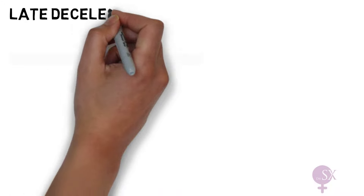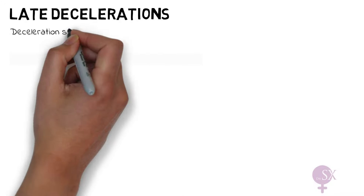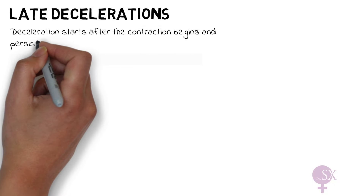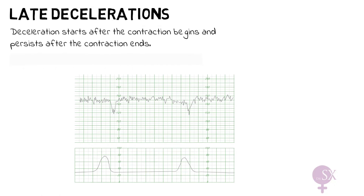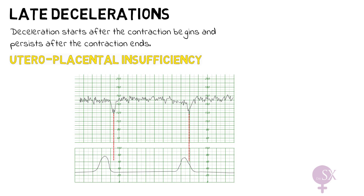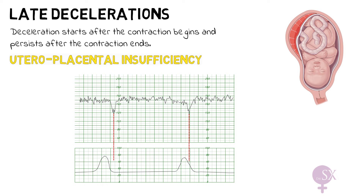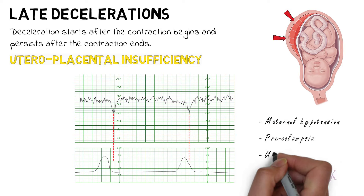Lastly, we have late decelerations. These begin at the peak of the uterine contraction and recover after the contraction ends. Late decelerations are bad news and they indicate insufficient blood flow to the uterus and placenta. Uteroplacental insufficiency results in reduced blood flow to the fetus, causing fetal hypoxia and acidosis. Uteroplacental insufficiency may be secondary to maternal hypotension, preeclampsia, or uterine hyperstimulation.